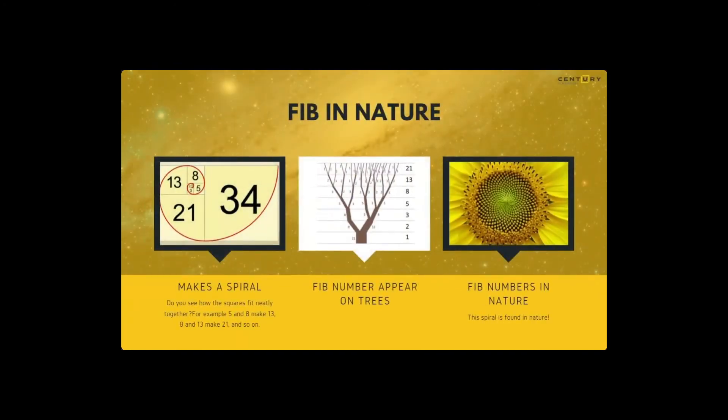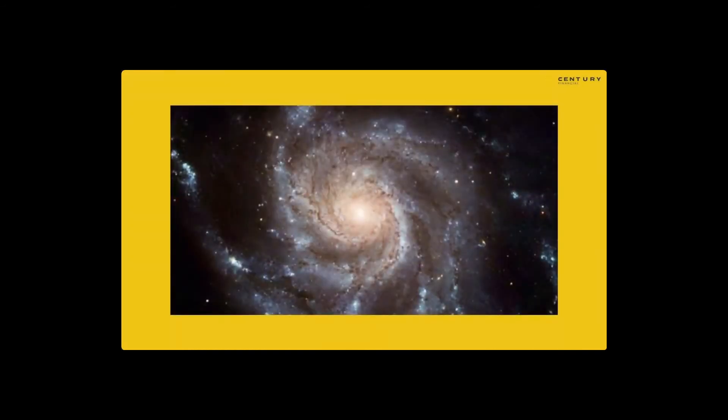A sunflower has the same spiral but in a much more detailed version. And if you look at our entire galaxy, the spirals also align with the Fibonacci series of numbers.